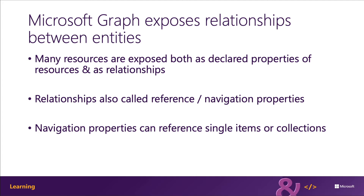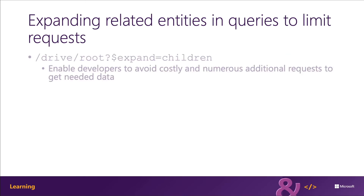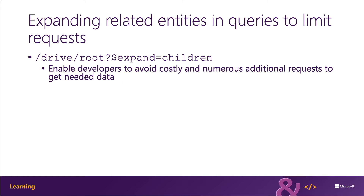You can use the expand query parameter to include the expanded resource or collection referenced by a single relationship in your results. The expand operator can be used to expand a collection of items, saving you from issuing additional requests. In this example, you've requested Microsoft Graph to automatically include the children collection from the drive/root endpoint. The response will include all of the default properties for the collection of files and folders within the root folder of the user's OneDrive.